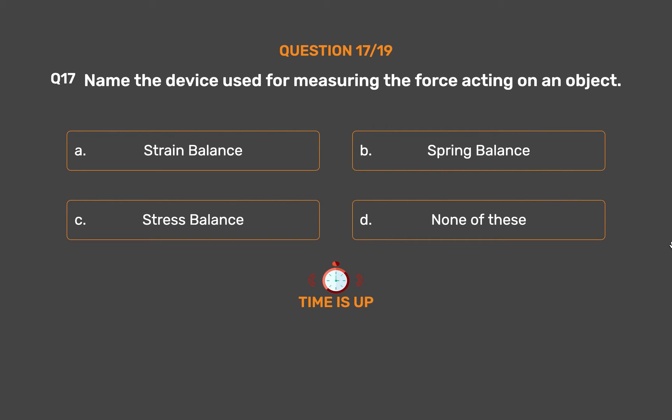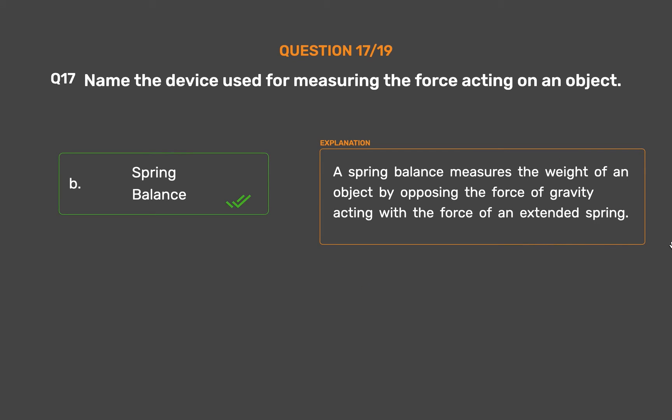The correct answer is Option B: Spring balance. A spring balance measures the weight of an object by opposing the force of gravity acting with the force of an extended spring.